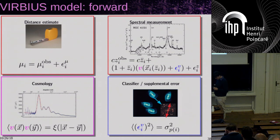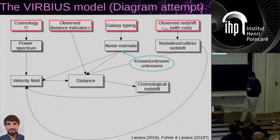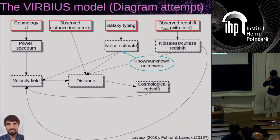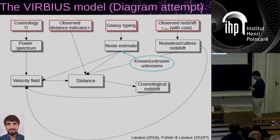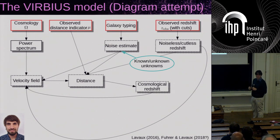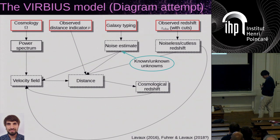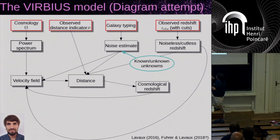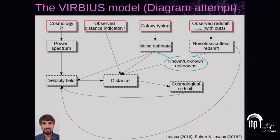It's a model that already has many gears working a bit differently. We re-implemented this — there was Virbius one, and now we are working on Virbius two. That's work by Florian. It's like a pasta sauce because it has a cosmology density here. You have observed distance indicators, with unknown galaxies — whether they are good tracers or bad tracers — and you're unsure about their characterization. You have observed redshifts, and you try to mix this data together in different ways. The galaxy typing is going to affect the noise estimate. The observed redshifts have trouble because of systematic effects in the selections and redshifts.